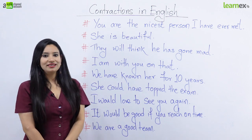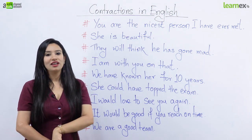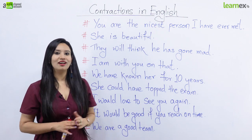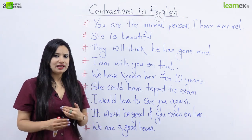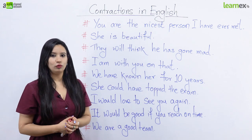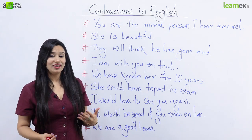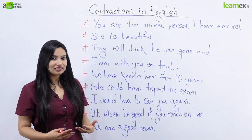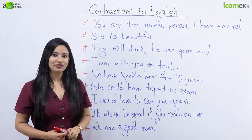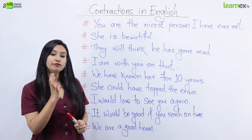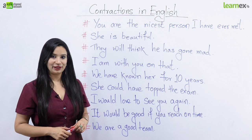Toh dekhte hain humara pehla sentence: 'You are the nicest person I have ever met.' Iska matlab hota hai: tum sabse achhe insaan ho jis se main aaj tak mila hoon. Aapne obviously aisi Hindi mein kisi na kisi ko toh kaha hoga. Toh in English mein ab bolte huye hichkichate hain, ya phir aapko darr lagta hai, ya aise hi kaha ho. Isi sentence ko hum aur fluently aur naturally bol sakte hain agar hum contractions ka istemal karenge.